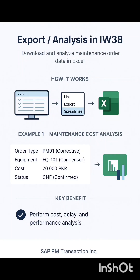In IW38 you can also download and analyze maintenance order data in Excel. For example, order type PM01 (Corrective), equipment EQ101, cost 20,000, and status CNF (Confirmed) — you can export that data through the List menu and perform cost, delay, and performance analysis of these maintenance orders. This is one of the main uses of the IW38 transaction: to export and analyze data for all types of maintenance orders.